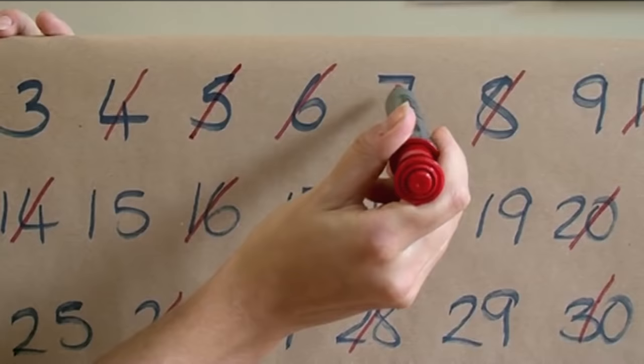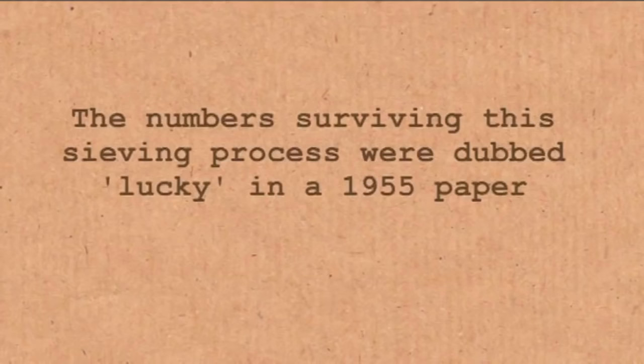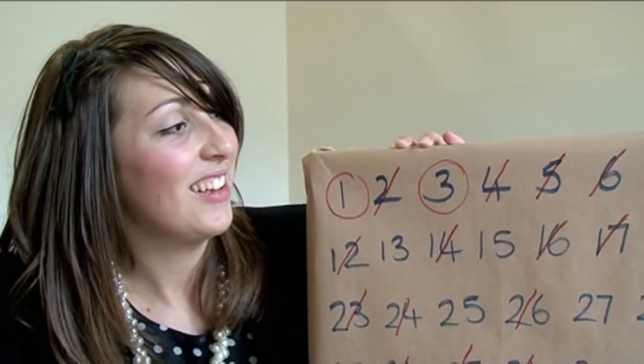1, 2, 3, we get rid of 11. So at the moment, 1 and 3 are both safe. They're lucky numbers. We carry on with the algorithm.